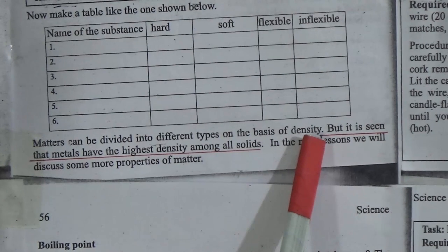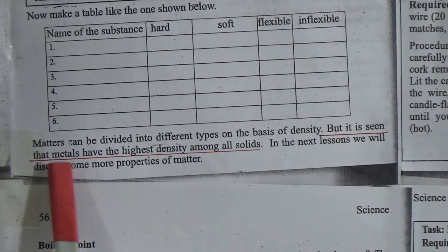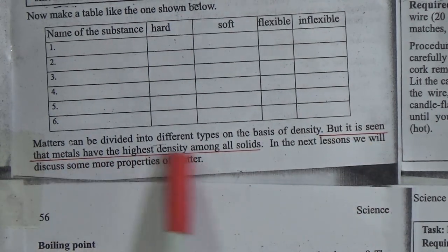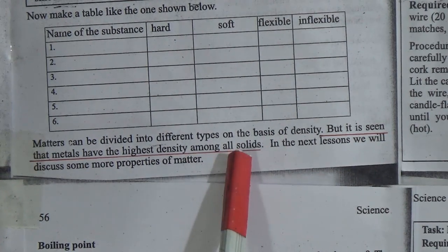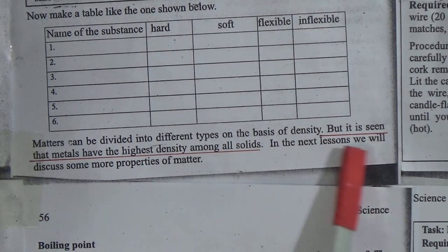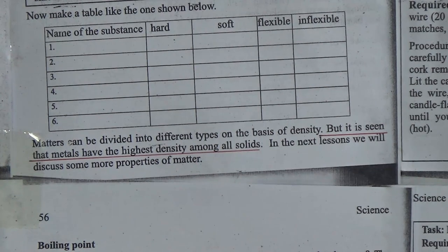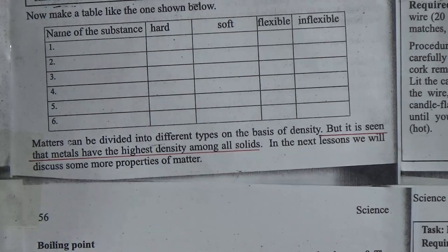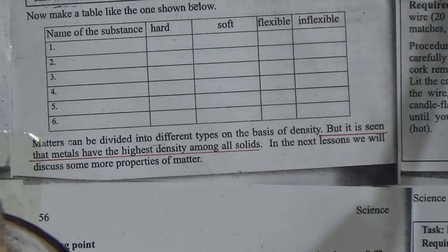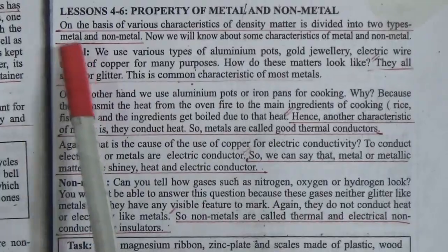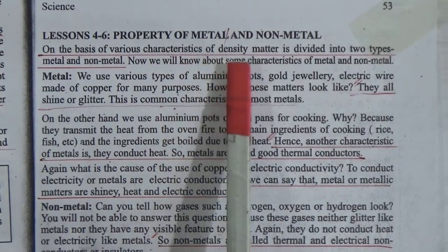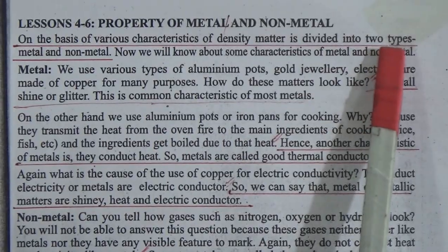In the next lesson, we will discuss more properties of matter. Lesson 4 and 5: Properties of Metal and Non-Metal. On the basis of various characteristics including density, matter is divided into two types: metal and non-metal.